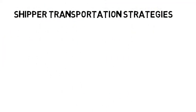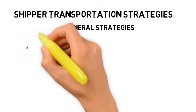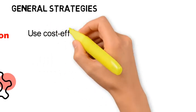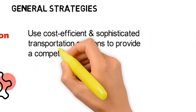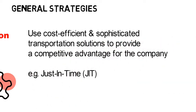The number one general strategy is innovation: proactively finding cost-efficient and sophisticated transportation solutions to provide a competitive advantage for the company. The JIT approach to manufacturing might see a manufacturer maintaining a very low inventory of one day's worth of raw materials, reducing space required and cutting down on inventory costs while improving overall cash flow. For this to work, the supplier must have good transportation resources to deliver the right amounts of materials to the factory on a daily basis.